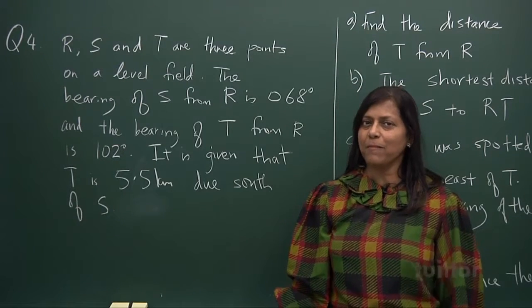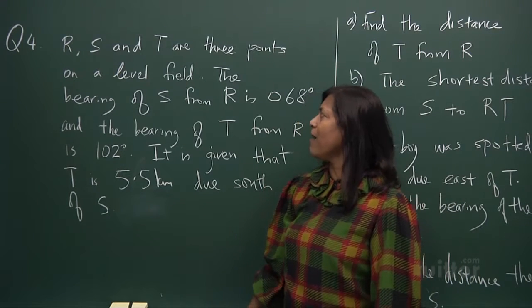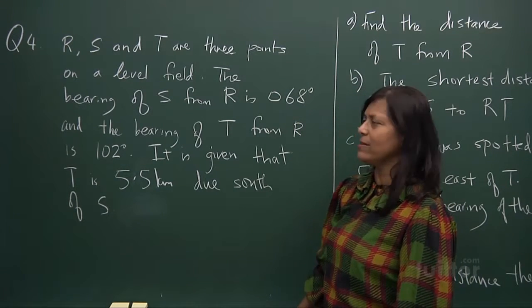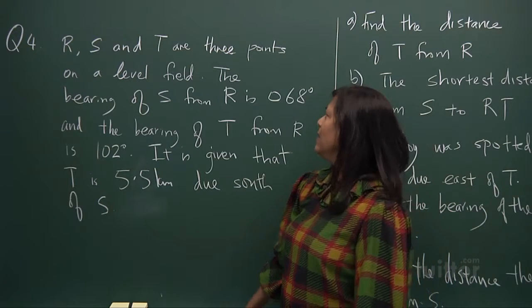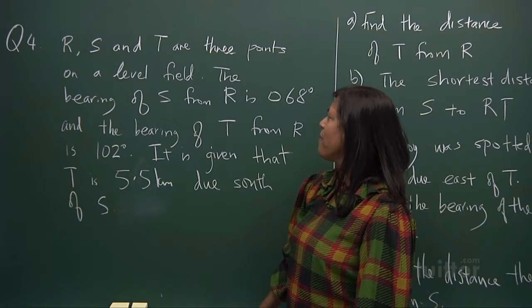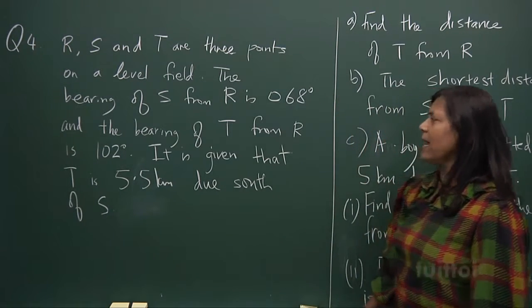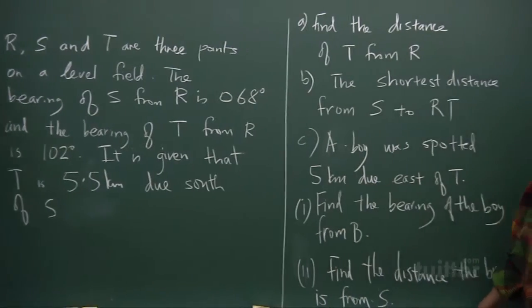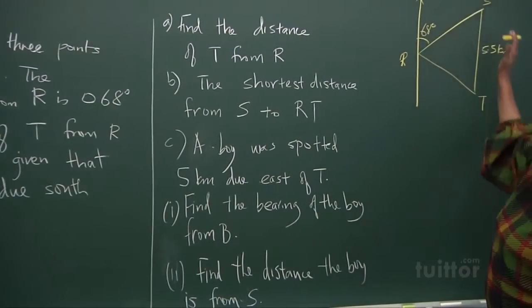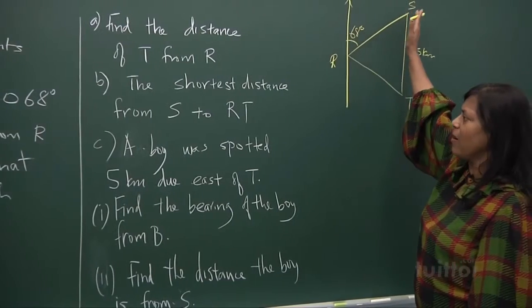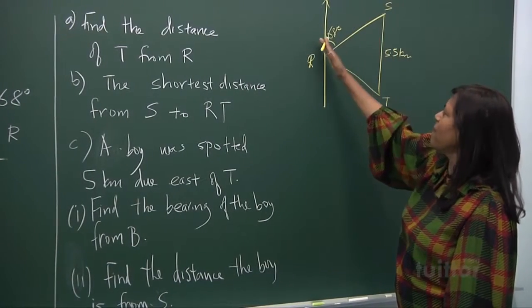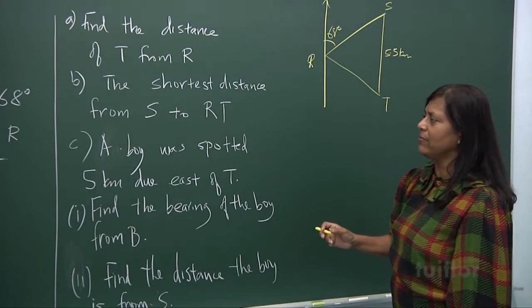Okay, now we're going to go into a problem where they say R, S, and T are three points on a level field. The bearing of S from R is 68 degrees. Now let's look at it again, this is a level field, the bearing of S from R is 68 degrees.